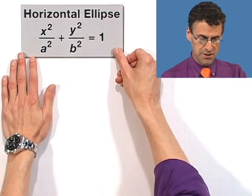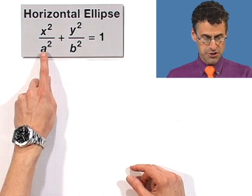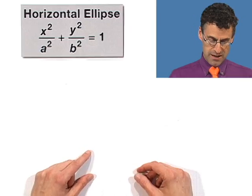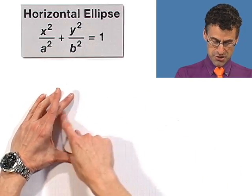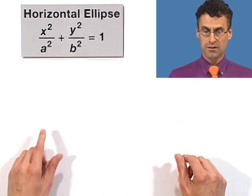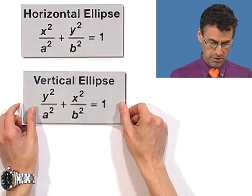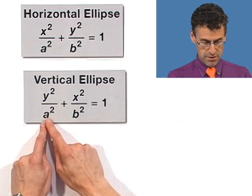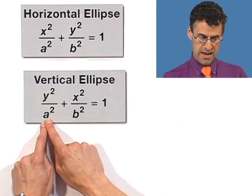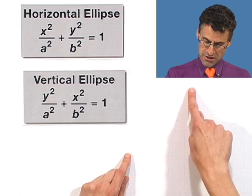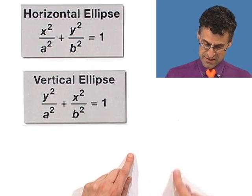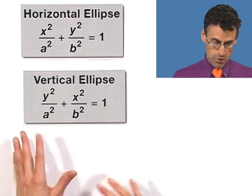Let's take a look at graphing some ellipses. Those are the beautiful conic sections we get when we slice just slightly askew — not parallel to the base — and get that beautiful oval-shaped thing. There are two types of ellipses in the plane. There's the horizontal ellipse, where the A term is greater than or equal to B, with the major axis along the horizontal. And then the vertical ellipse, where the A is the biggest term and the major axis is along the Y axis.